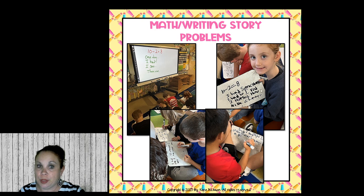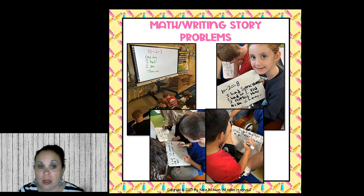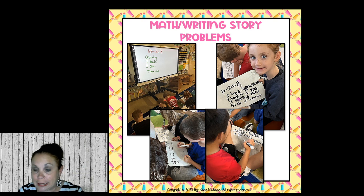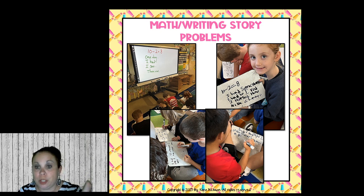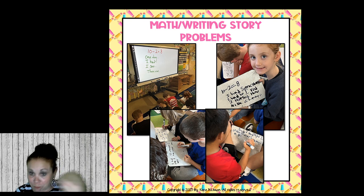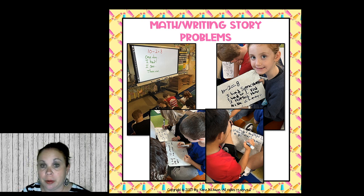At the end of the year, students generated their own story problems on their whiteboards using sentence starters. One little girl wrote: 'I had 10 horses and I rode two — how many do I have left?' They did a great job because we had been practicing all year with the sentence starters. Without much prompting, they just took off on their own. After writing, they turn and tell each other their story problems, share with each other, and compare to see if their partner had the same or something different.